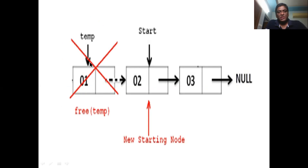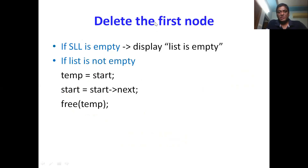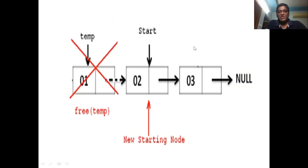First, suppose the list is not containing any node — if start equals null it means the list is empty, so you cannot delete anything. That is our first case: if the singly linked list is empty then there is nothing to delete, so simply display the message 'list is empty' using printf. If the list is not empty, that means there are some nodes.